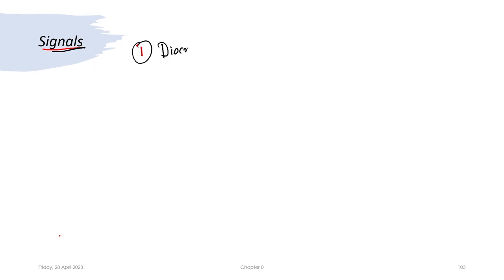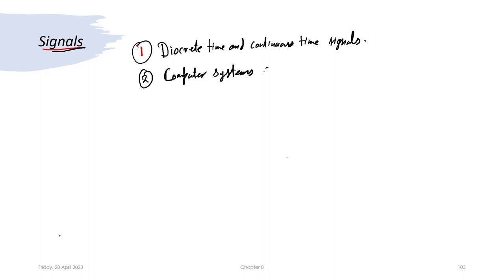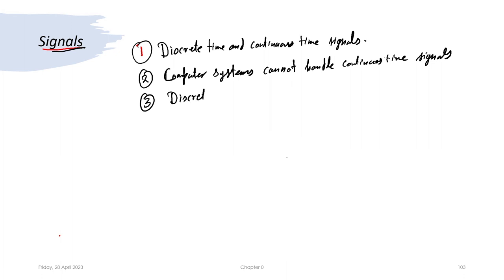I will take some knowledge of signals for granted. We should note that MATLAB — and I believe you know the difference between discrete time and continuous time signals — computer systems cannot handle continuous time signals. So we will restrict ourselves to discrete time signals.